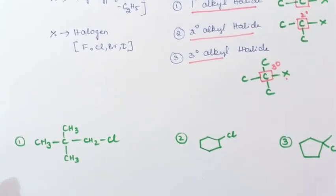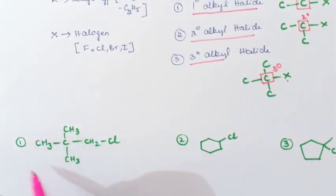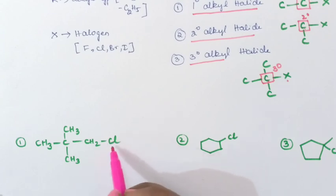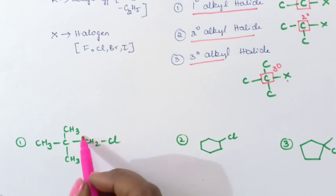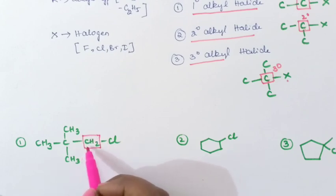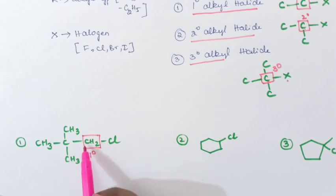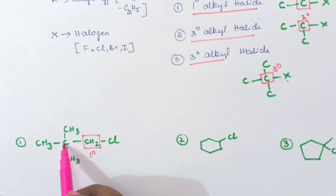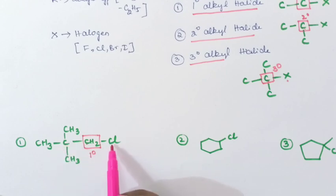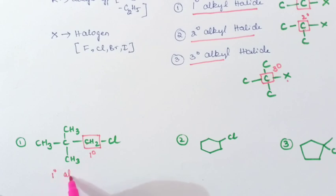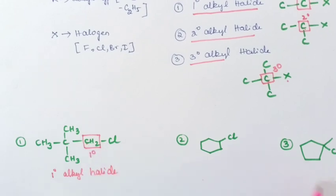So here is the first example. You need to check whether this is a primary, secondary, or tertiary alkyl halide. Chlorine is the halogen here, and it is connected to this carbon. So what kind of carbon is this? This is a primary carbon, because this carbon is connected to only one other carbon. So if the halogen is connected to a primary carbon, it is called a primary alkyl halide. So this is a primary alkyl halide.